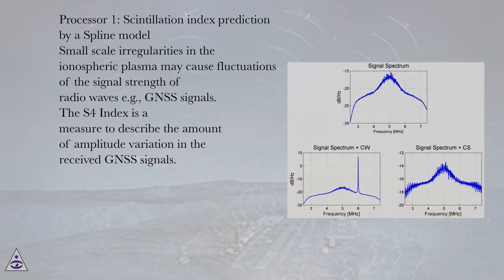of radio waves, for example, GNSS signals. The S4 index is a measure to describe the amount of amplitude variation in the received GNSS signals.